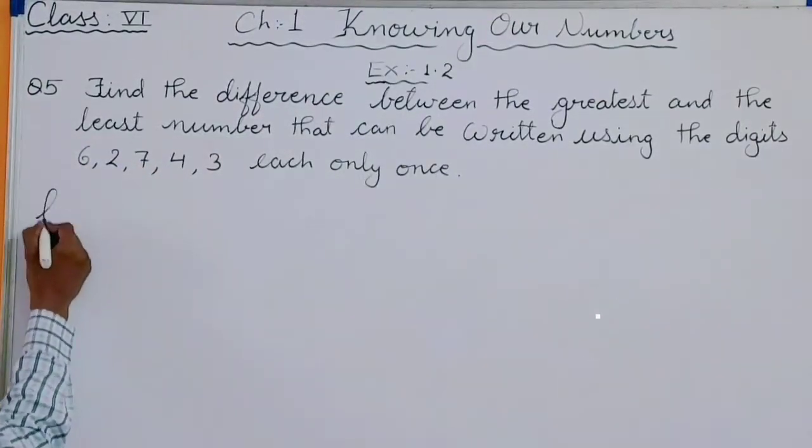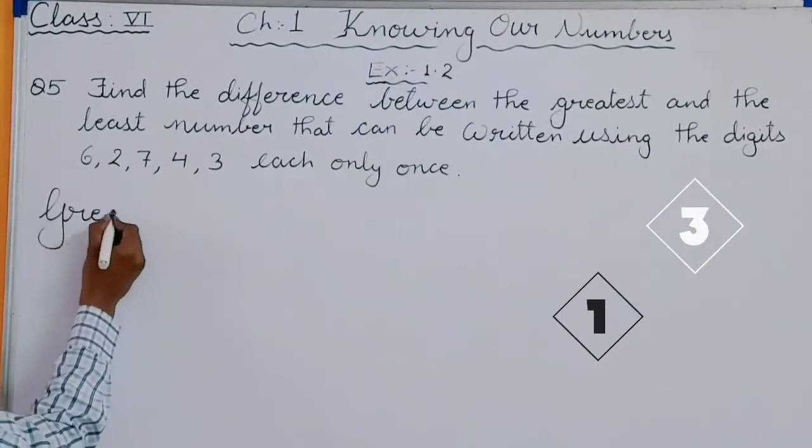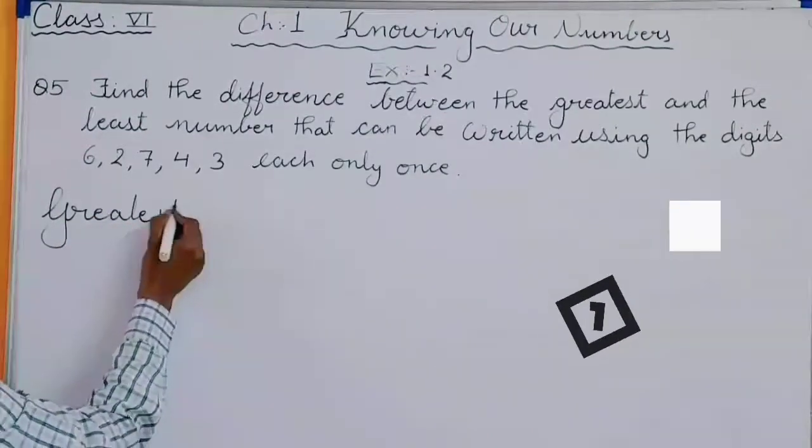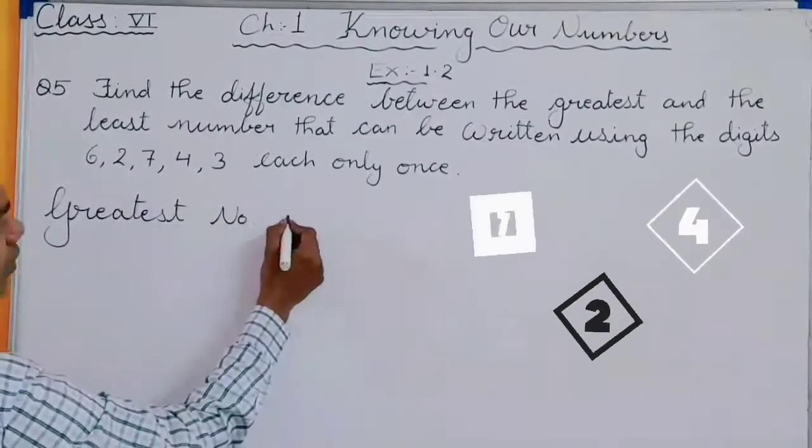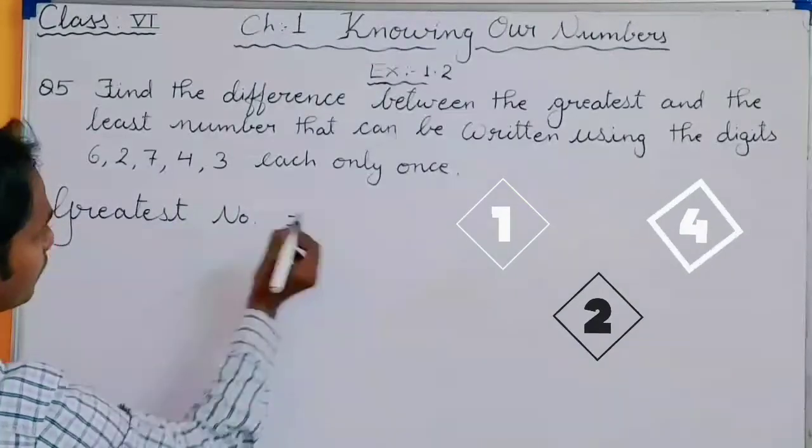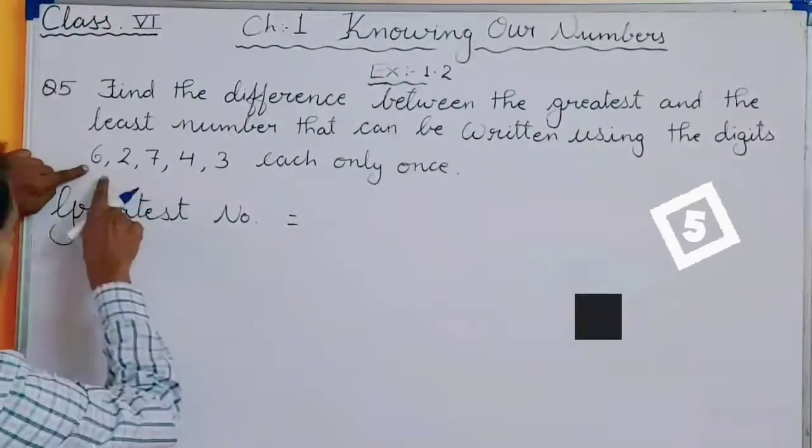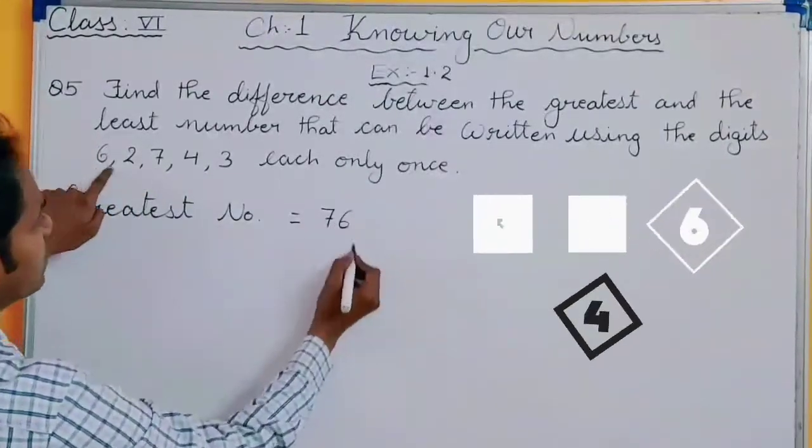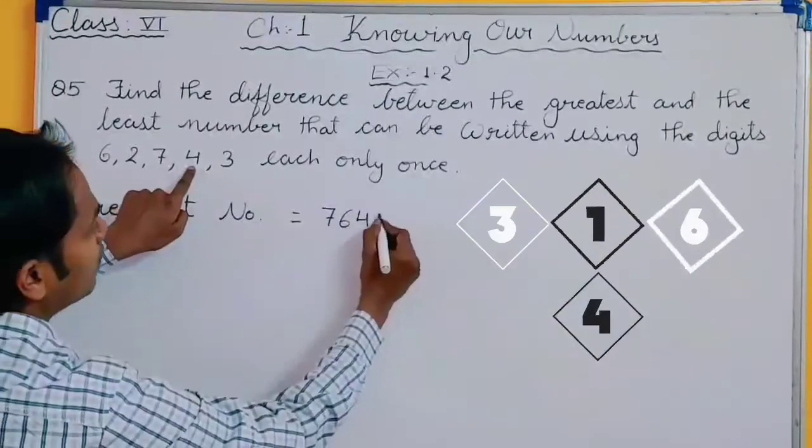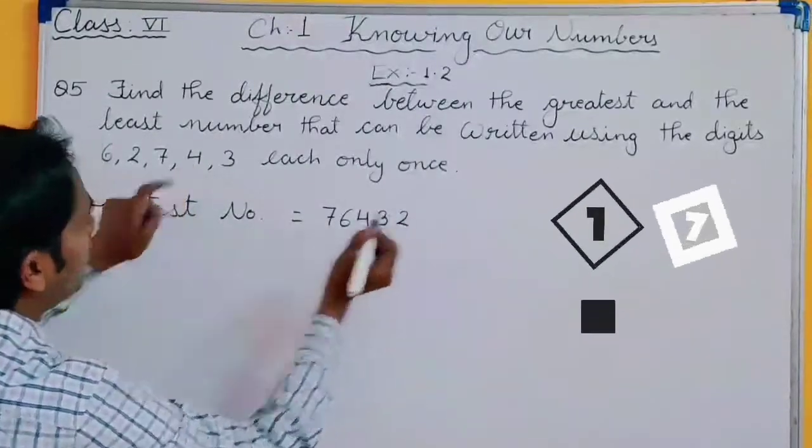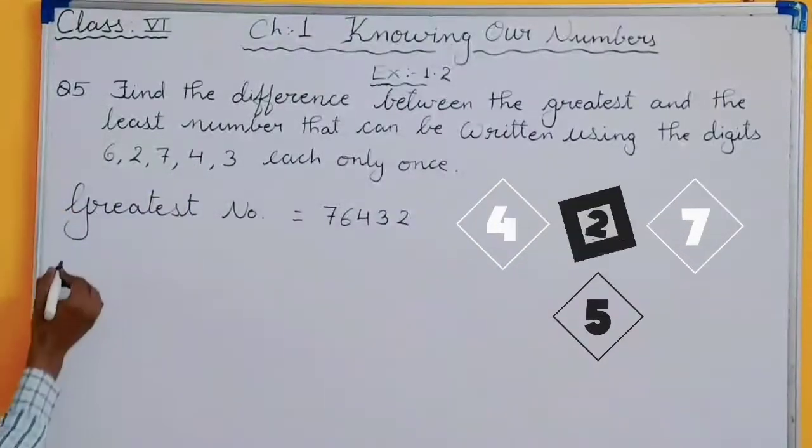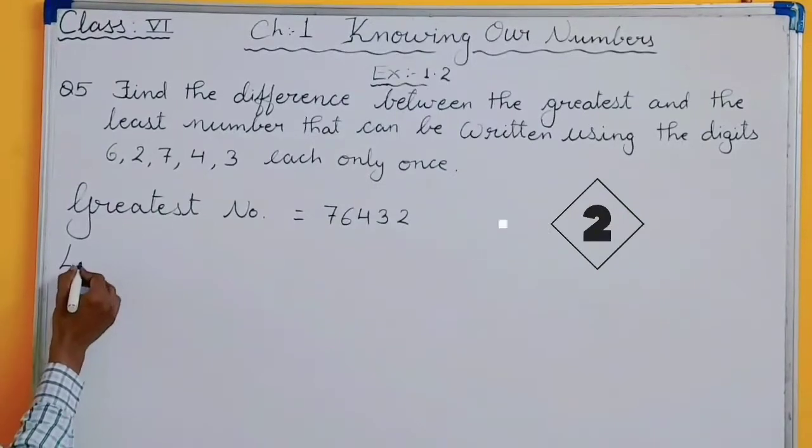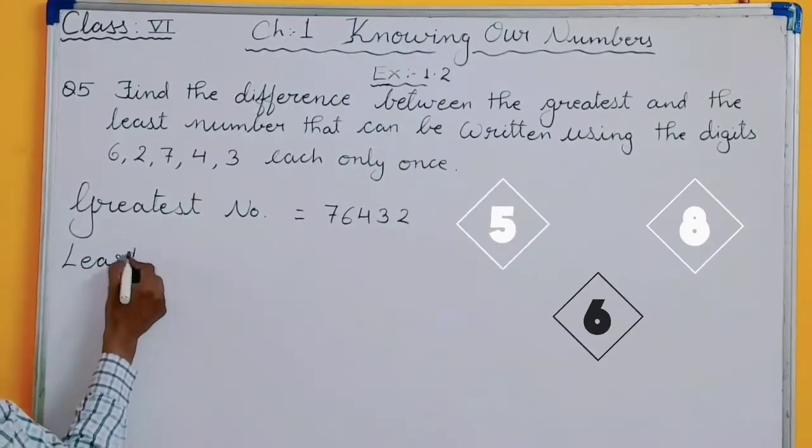So how can you form the number? First, we will form the greatest number. Your greatest number starts with the highest number. Which is the highest digit here? 7, then 6, 4, 3, and 2. This is your greatest number. Now we will form the least number.